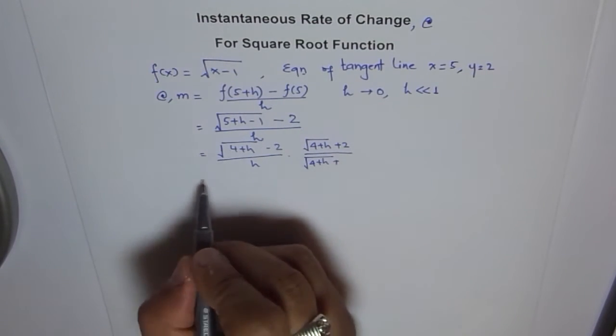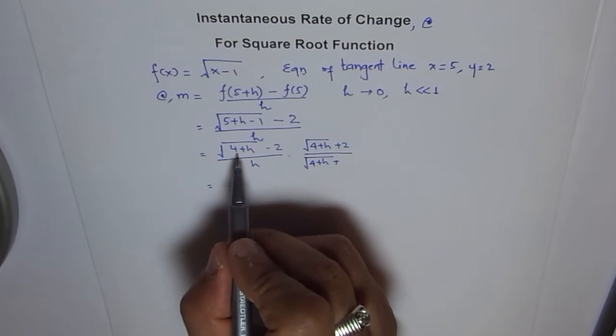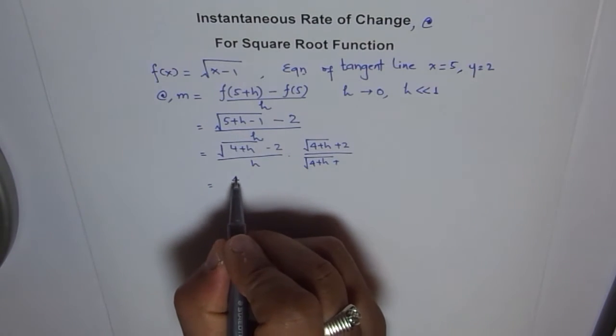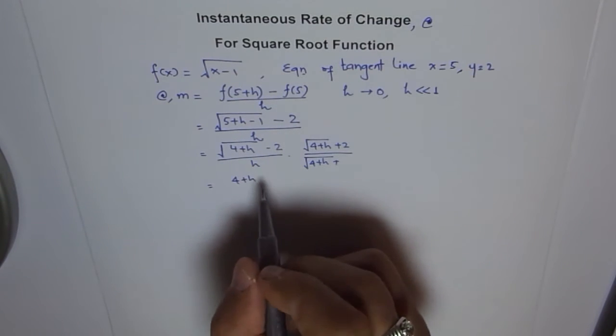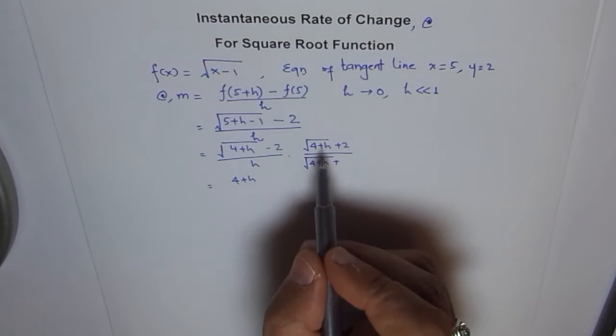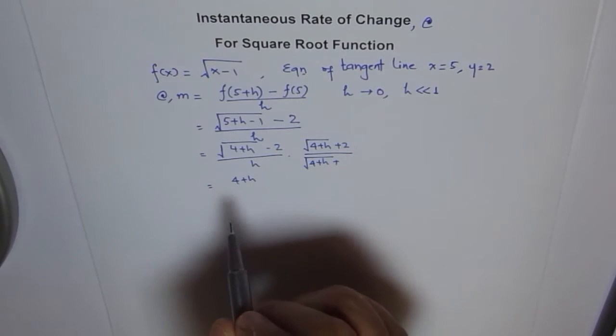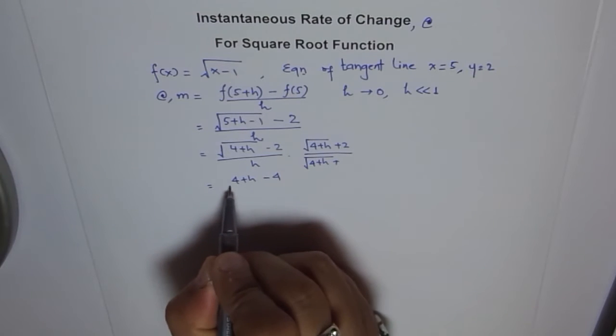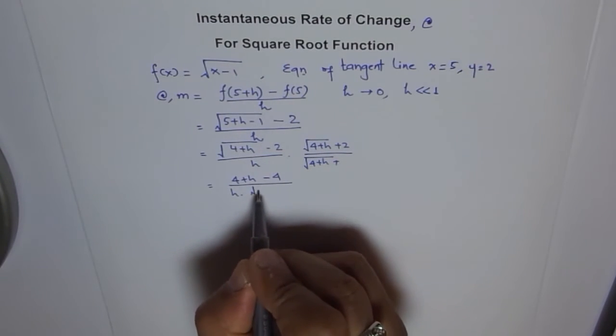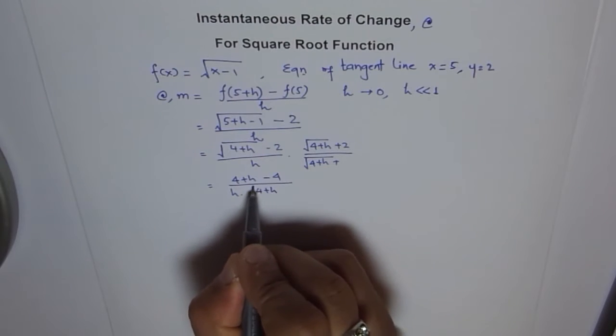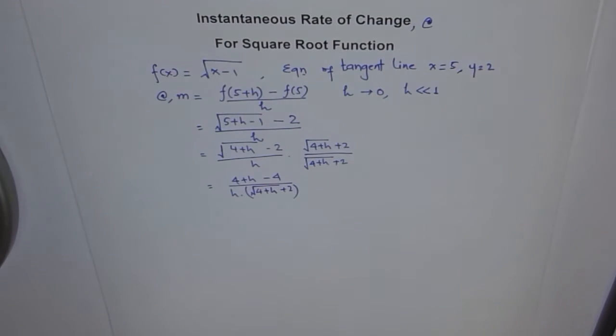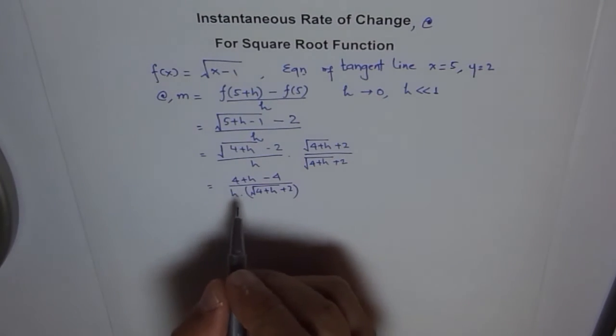So when you do this, then in the numerator you get a² minus b². Square of this will be just 4+h, you will get rid of square root. And that's the whole idea of rationalizing, to get rid of square root. Minus 2 square, which is 4, over h times square root of 4+h plus 2.